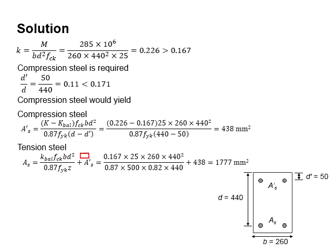Substitute AS' into the equation here. You will obtain the AS required equals to 1777 mm². With that, you need to provide reinforcement bar area slightly bigger than this value.